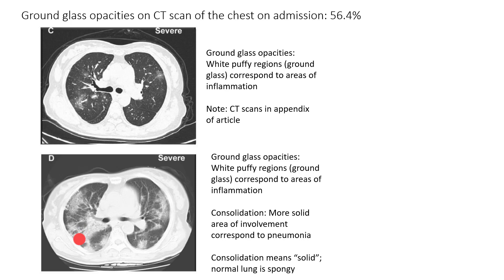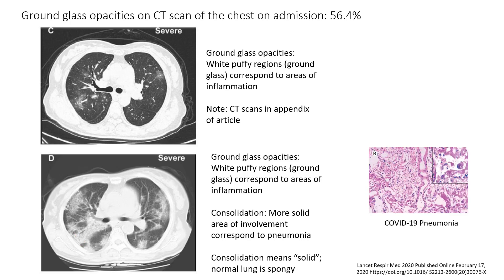Consolidation means solid. The normal lung is very spongy, just like a kitchen sponge. When it becomes very diseased, it becomes much more solid. The word consolidation was originally used when referring to autopsies. However, it is also used in radiology to refer to a more serious area of involvement. Here on the right, I've shown a photograph from COVID-19 pneumonia, which was shown in a published autopsy from Lancet Respiratory Medicine.